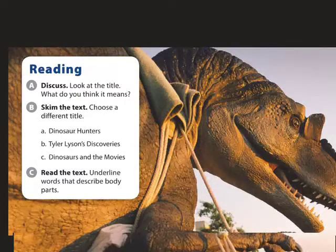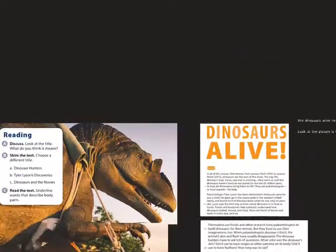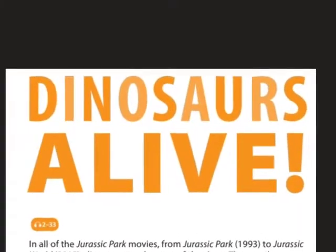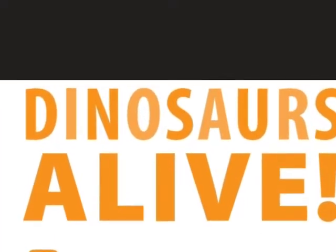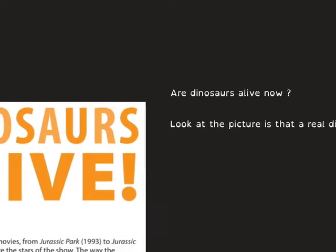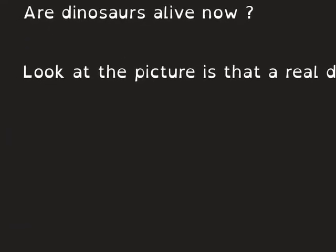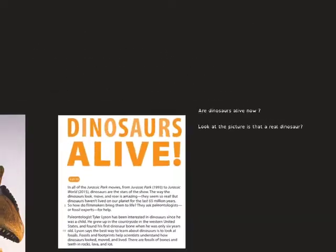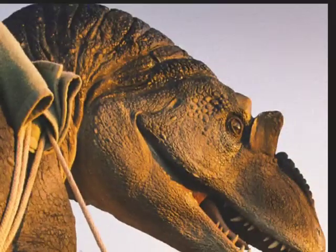Let's start exercise A. It says: look at the title — what do you think the title means? The title is 'Dinosaurs Alive.' Alive means vivos, so dinosaurs vivos. Are dinosaurs alive right now? No, of course not — they're extinct.